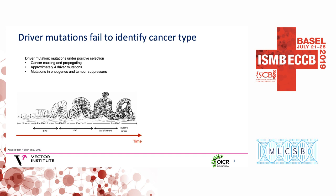The natural choice for a genomics-based test is to use driver mutations — those under positive selection, typically cancer-causing or cancer-propagating mutations, broadly split into mutations to oncogenes and tumor suppressors. There's good reason to believe driver genes are a good candidate. For example, the classic model for pancreatic adenocarcinoma shows it develops through mutations to four cancer genes, so if you see those four mutations in an unknown tumor, you have some evidence it's pancreatic cancer.